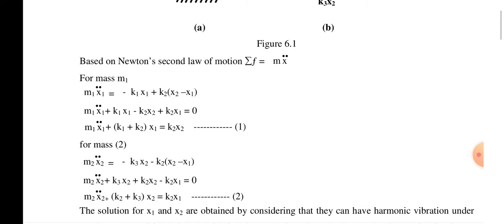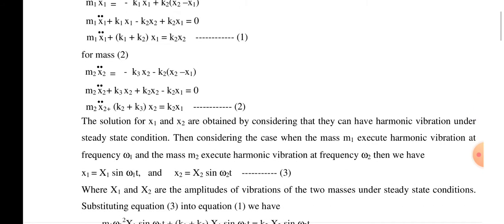For mass m2: m2·x2̈ = −k3·x2 − k2·(x2 − x1). Rearranging: m2·x2̈ + k3·x2 + k2·x2 − k2·x1 = 0, which gives m2·x2̈ + (k2 + k3)·x2 = k2·x1. The solutions for x1 and x2 are obtained by considering harmonic vibrations under steady-state motion.